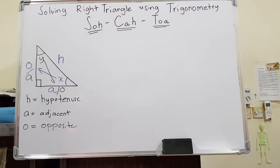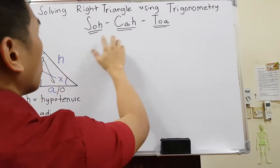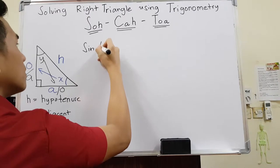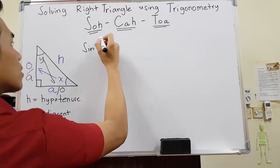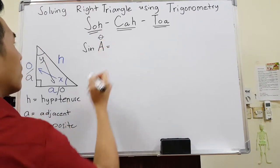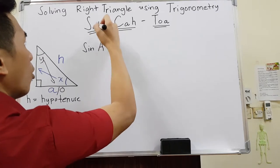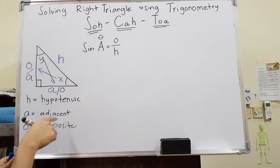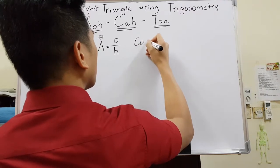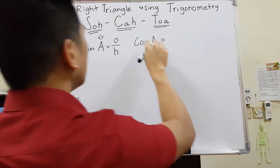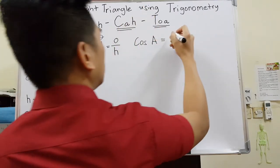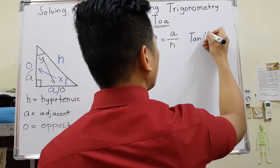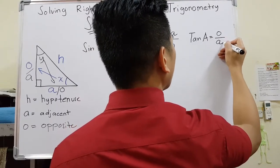Unlike the hypotenuse, it's always going to be there. Now, what is SOH CAH TOA? This is just an abbreviation. SOH means sine of the angle, which equals opposite over hypotenuse. CAH means cosine of the angle, which equals adjacent over hypotenuse. TOA means tangent of the angle, which equals opposite over adjacent.